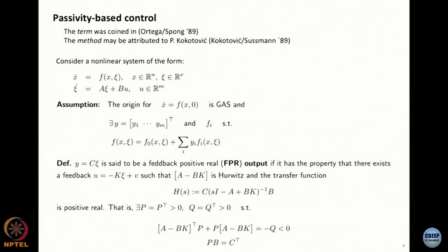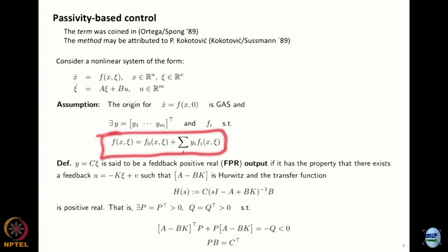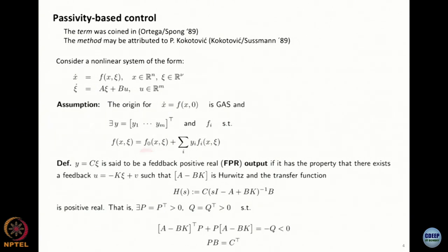Their result holds for systems where, when we take xi equal to zero, we know that the origin for the resulting system is GAS. The nonlinearity also has to be written in a specific form: from the nonlinearity you want to extract one part called f-zero, plus a sum of nonlinearities each multiplying certain outputs.